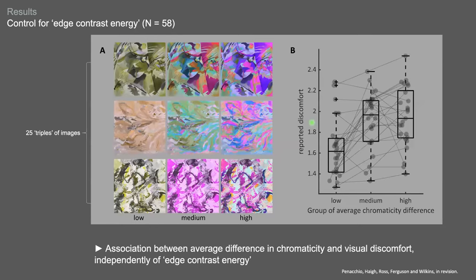So to better control for edge contrast energy, a possible confusing factor for the metric, we defined stimuli that vary in average chromaticity difference but not in edge contrast energy. Using rotations and pseudo rotation in the CIELAB space, we defined triples of images made of three levels of the metric, a low, medium, and high level, but the same level of edge contrast energy. Using the same experimental procedure as for the preceding experiment, analyzing the data using observer identity and identity of stimuli triples as random factors, we found that increasing values of the metric were associated with increased values of visual discomfort. So that confirmed the previous result with more control on luminance contrast energy.